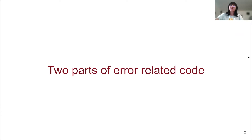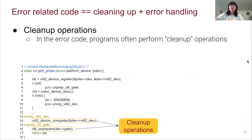Before we talk about detecting disordered error handling bugs, I first want to introduce two important parts of error handling code. Error handling code, or error release code, actually consists of two parts: cleanup operations and error handling parts. The cleanup operations are typically used to clean up the resources that are previously initiated by some functions. For example, the most commonly used cleanup operations include deallocation functions, ref count decrease functions, or unregister functions, as shown in this code example.